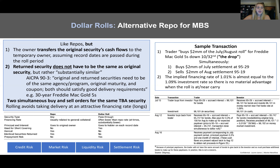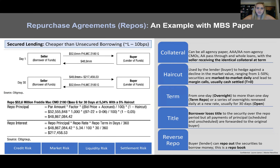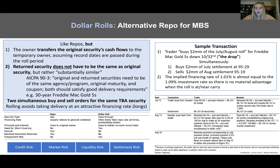Dollar rolls are an alternative form of repo for mortgage-backed securities. The key distinguishing difference from a regular repo is that in a dollar roll you can actually get a different security back — something substantially similar but not the same security. This connects to the earlier discussion on deliver to worst: when you have physical settlement, they don't have to give you the same security back, they give something substantially similar, and they'll deliver to worst. Understanding dollar rolls and physical settlement CDS together reinforces this concept.